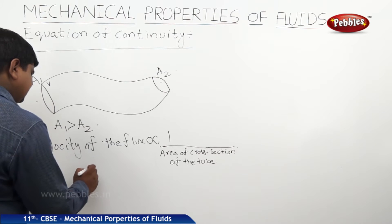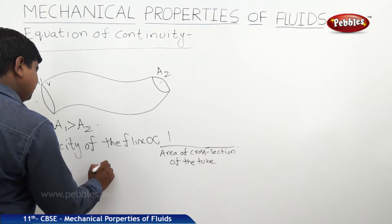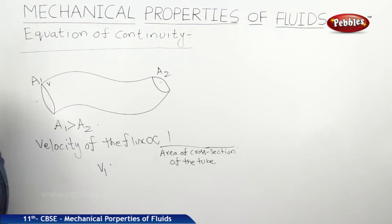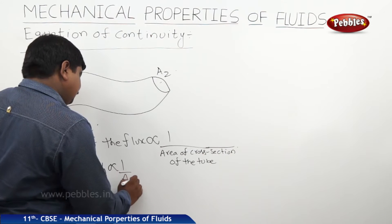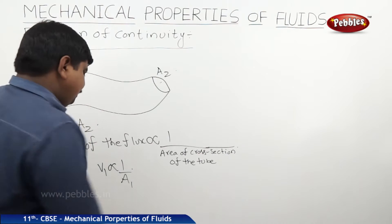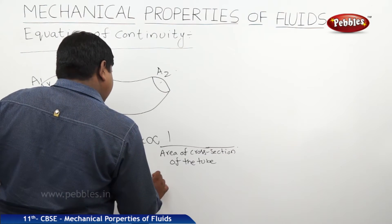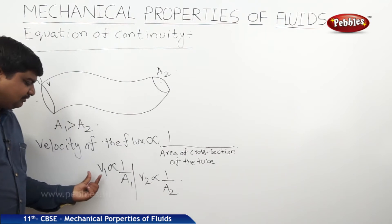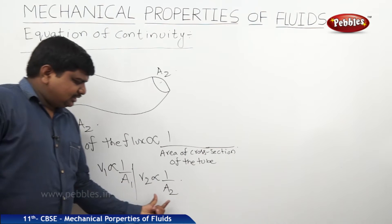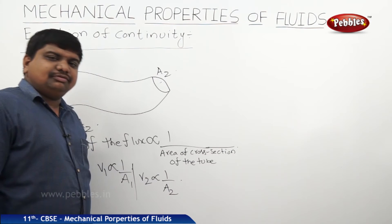At area A1, the velocity of the fluid is V1. Therefore, V1 is proportional to 1 by A1, and V2 is proportional to 1 by A2. Since A1 is more, velocity V1 will be less. But A2 is less, so V2 will be more.